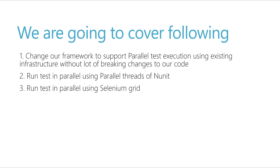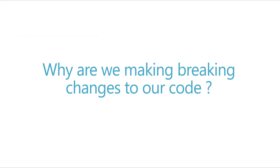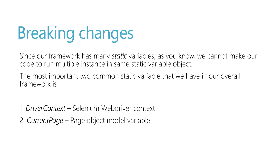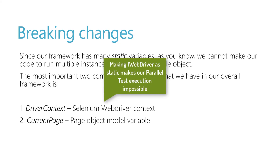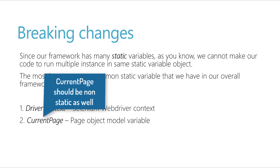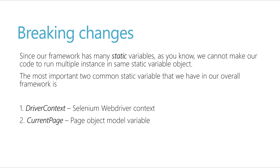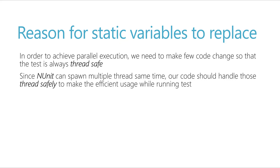Finally, we will be running parallel tests using Selenium Grid, so our complete code will be running in parallel execution using Selenium Grid's power. Now, why are we making breaking changes to our code? Since our framework has many static variables, we cannot run multiple instances in the same static variable object. The two most common static variables in our framework are the driver context and the current page — responsible for the Selenium WebDriver context and the page object model variable used across all pages and steps.